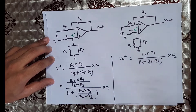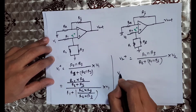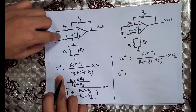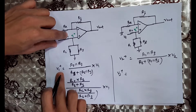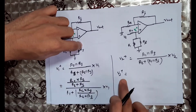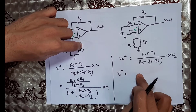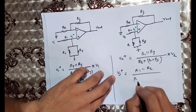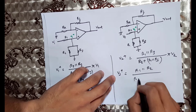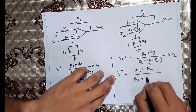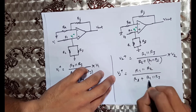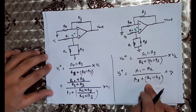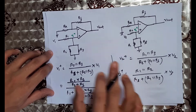Similarly, V+ due to V2 equals R1 parallel R3 divided by R2 plus R1 parallel R3, multiplied by V2. And V+ due to V3 equals R1 parallel R2 divided by R3 plus R1 parallel R2, multiplied by V3.